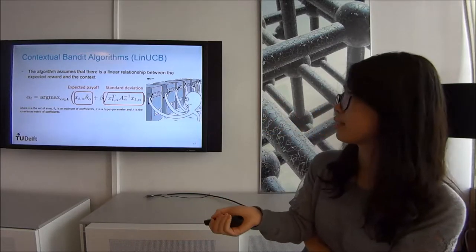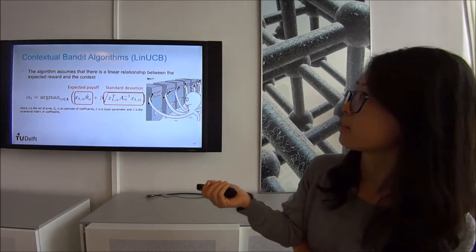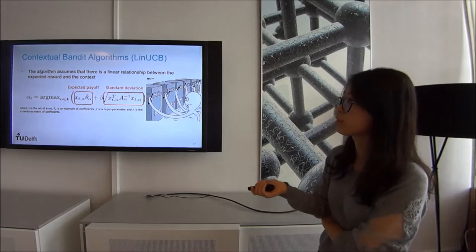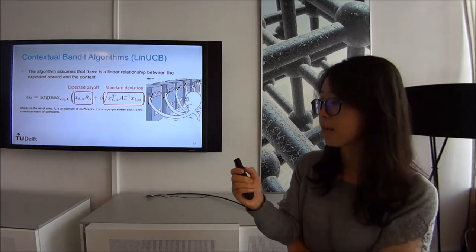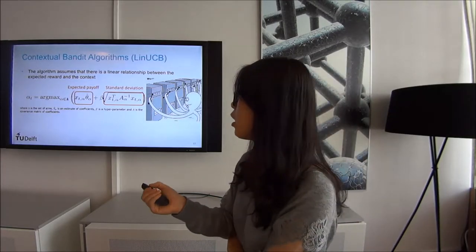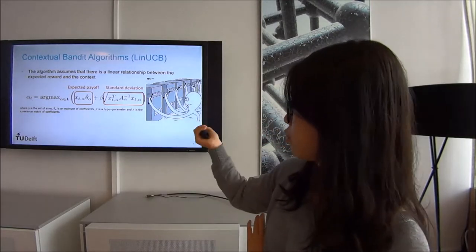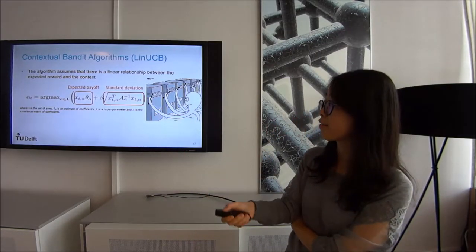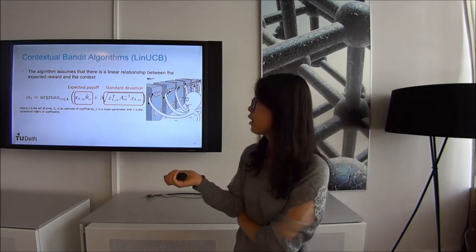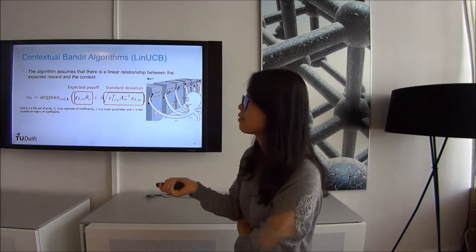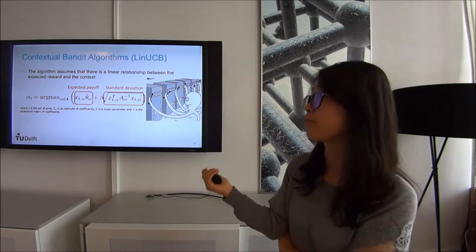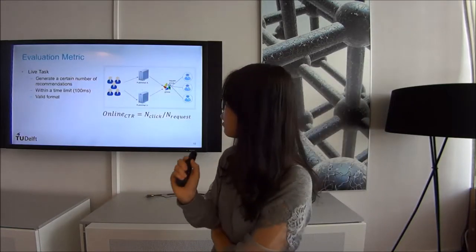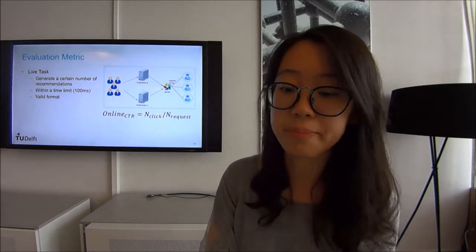The contextual bandit algorithm assumes a linear relationship between the expected reward and the context. Each time it chooses the arm with the highest final score, which combines the expected payoff and the standard deviation of the expected payoff. Here, XCE_alpha is the context information of arm alpha used for the recommendation.